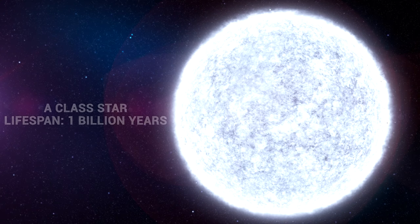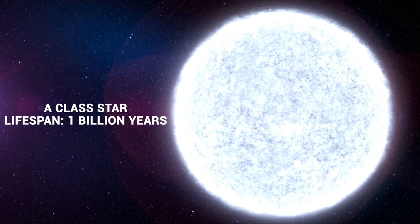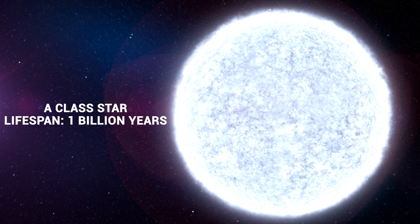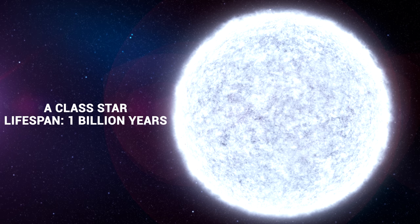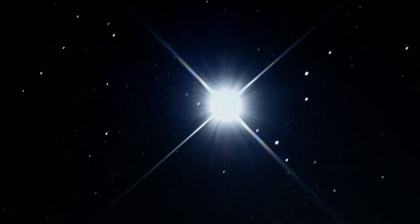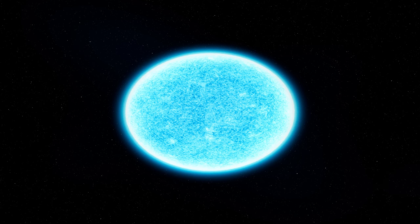A-class stars weigh anywhere from 1.6 to 2.4 times the mass of our sun, and have a lifetime of up to 1 billion years. There are some well-known A-class stars, such as Sirius, the brightest star in the night sky, and Vega, which spins so rapidly, it has turned into a distorted egg shape.